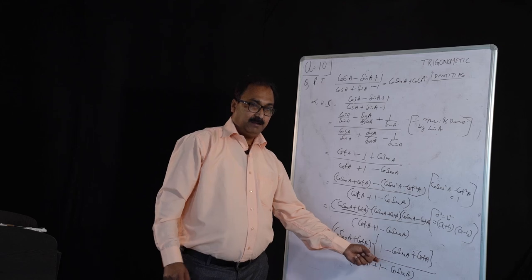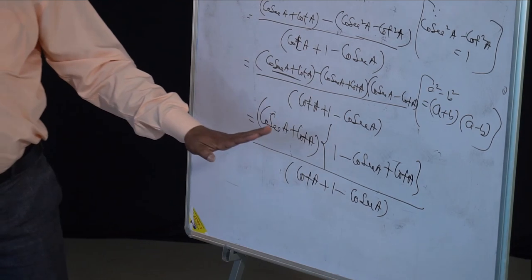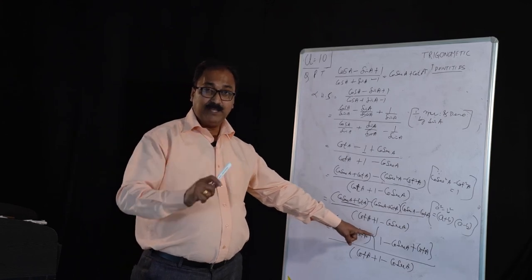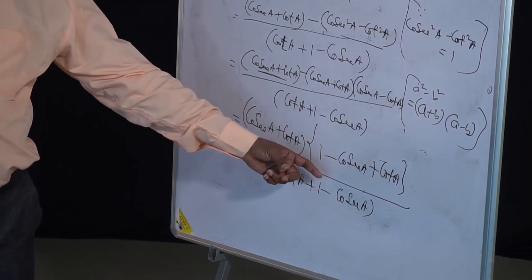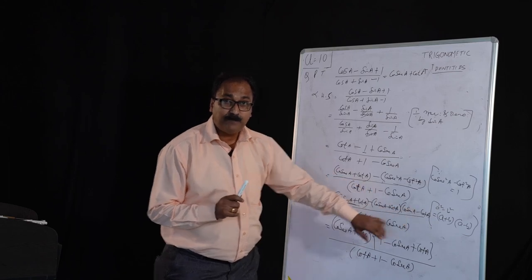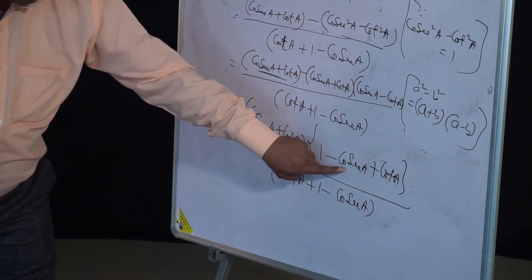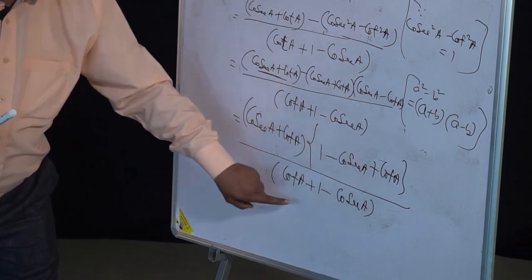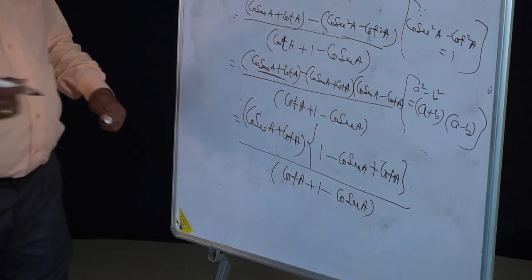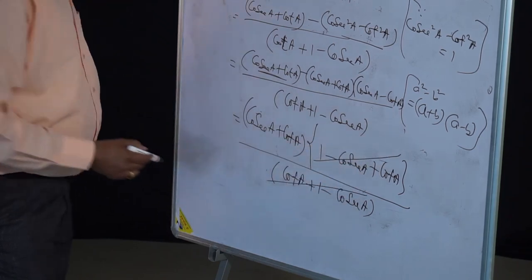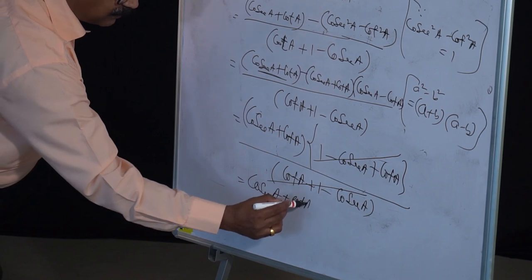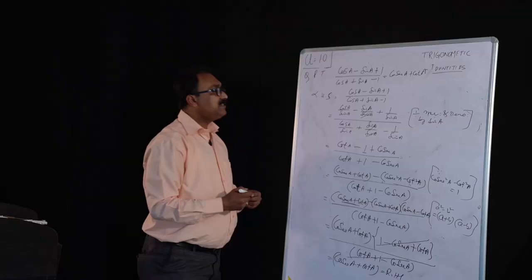Now you may think these are different, but remember the Hindi proverb: 'dekhne pe na jao, apne akal lagao' — meaning don't just go by appearances, use your mind. Look carefully: the bracket in the numerator gives plus 1 minus cosec A plus cot A, which is the same as the denominator: cot A plus 1 minus cosec A. They are exactly the same!